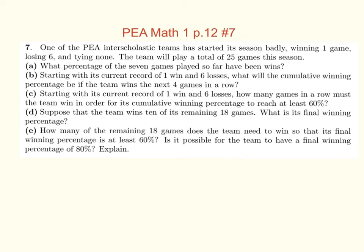This was on page 12, number 7. It deals with winning percentages. So let's start at A. It says one of the P.A. — or Phillips Exeter Academy — interscholastic teams started the season badly, winning one game and losing six and tying none. The team will play a total of 25 games this season.